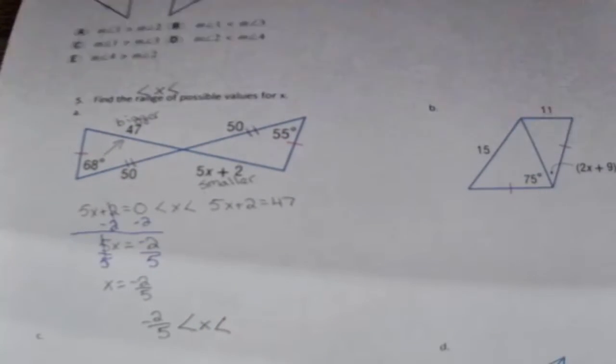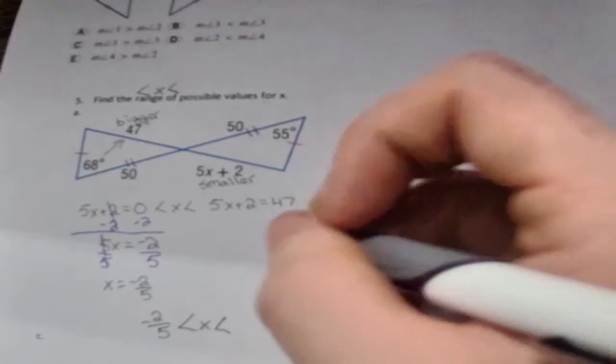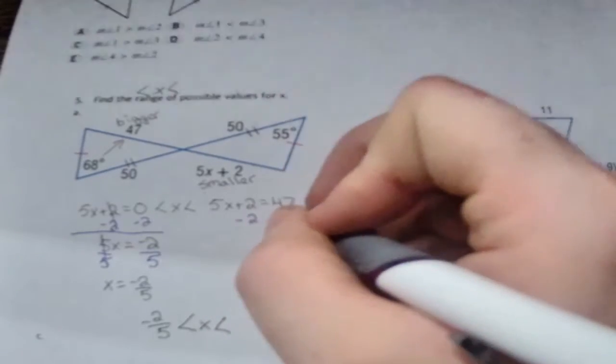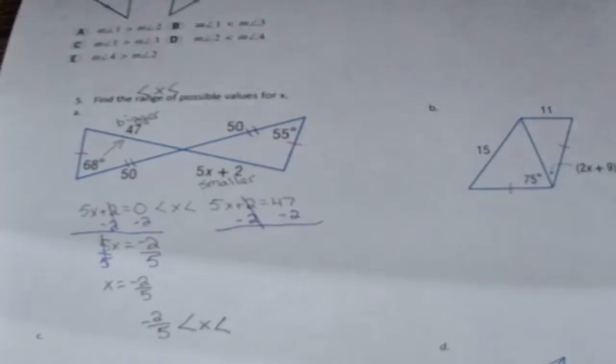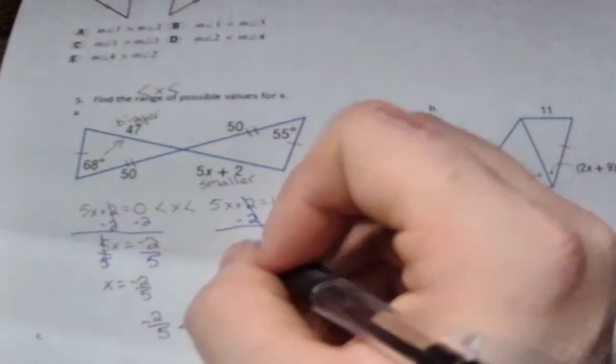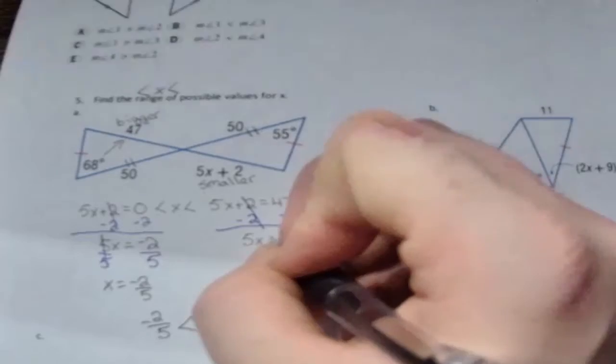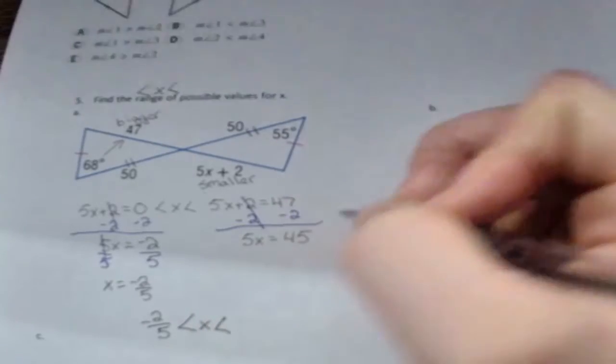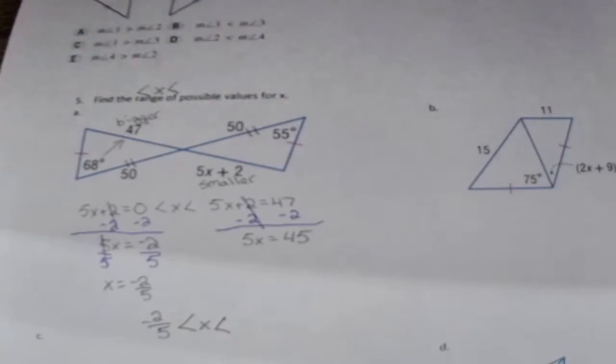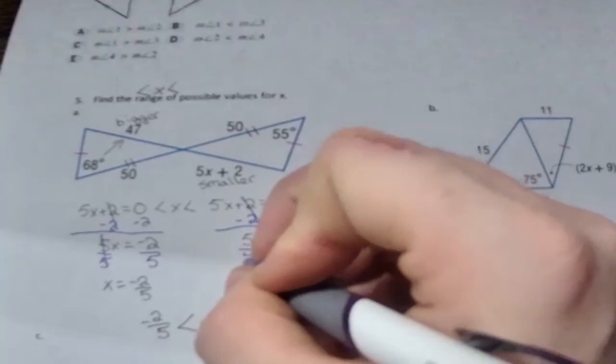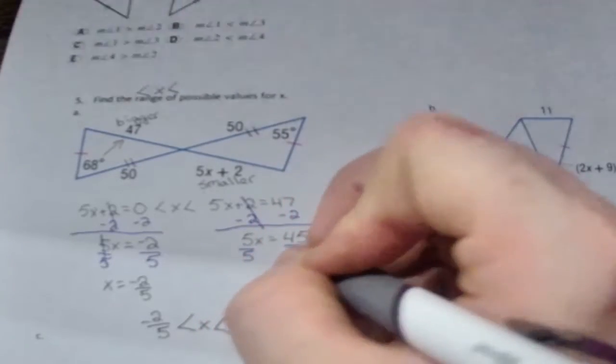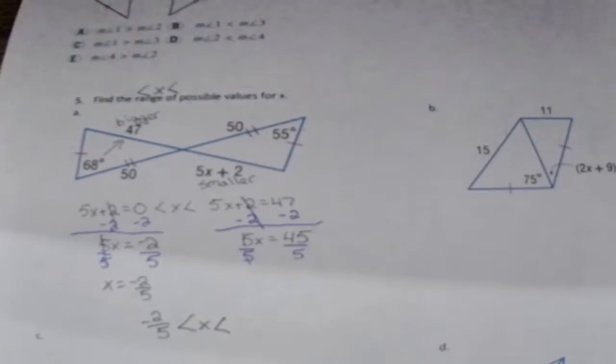So just like how we started the last one, we're going to start off by subtracting 2 from both sides. You have 5x equals 45, divide by 5, and x equals 9.